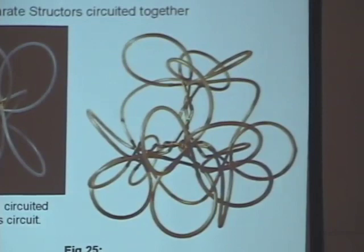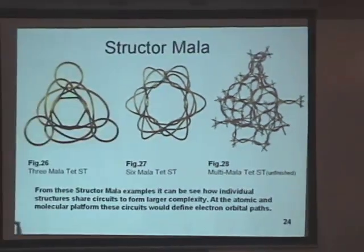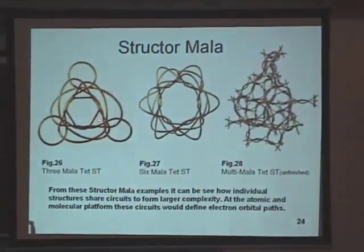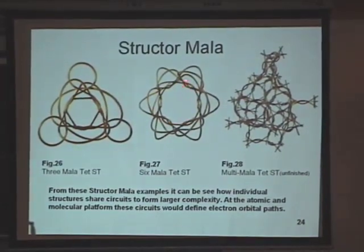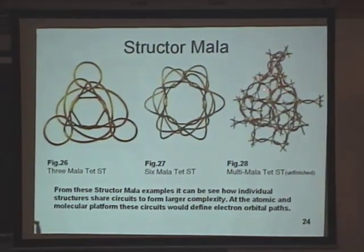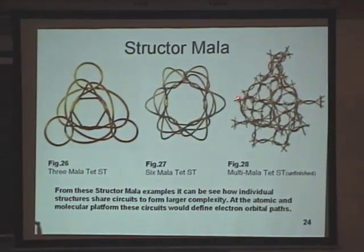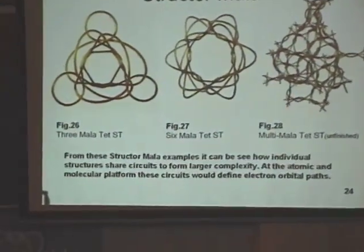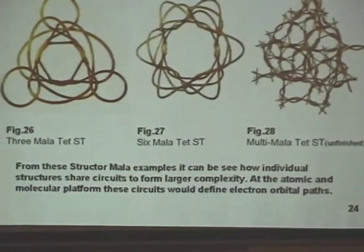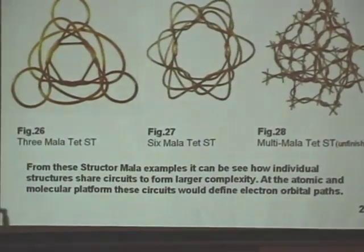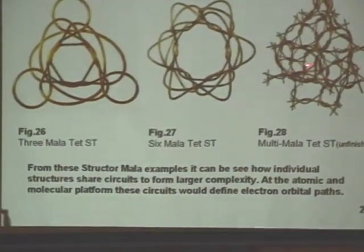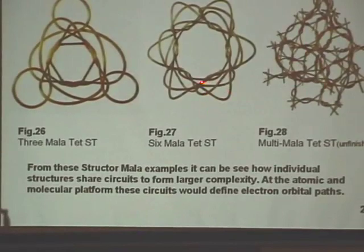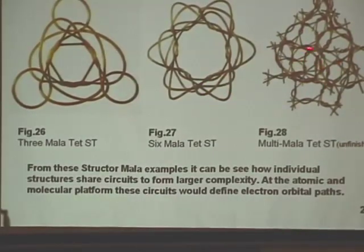These next ones are more complex forms — there's three, six — and this is a big complex one. I just quit making these because the circuitry here just kept going and wouldn't close. You can really see the cellular-like quality of something like this and how complex it can get.